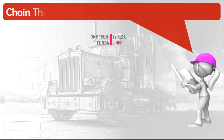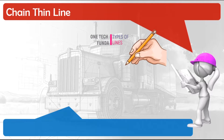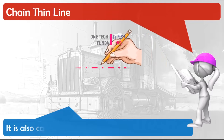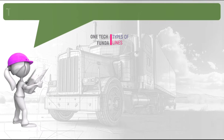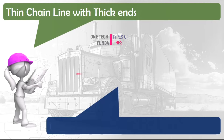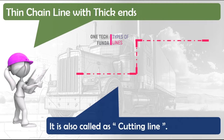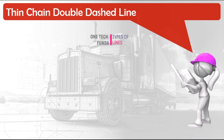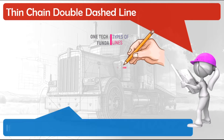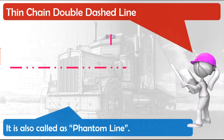Chain thin line — it is also called a center line. Thin chain line with thick ends — it is also called a cutting line. Thin chain double dash line — it is also called a phantom line.